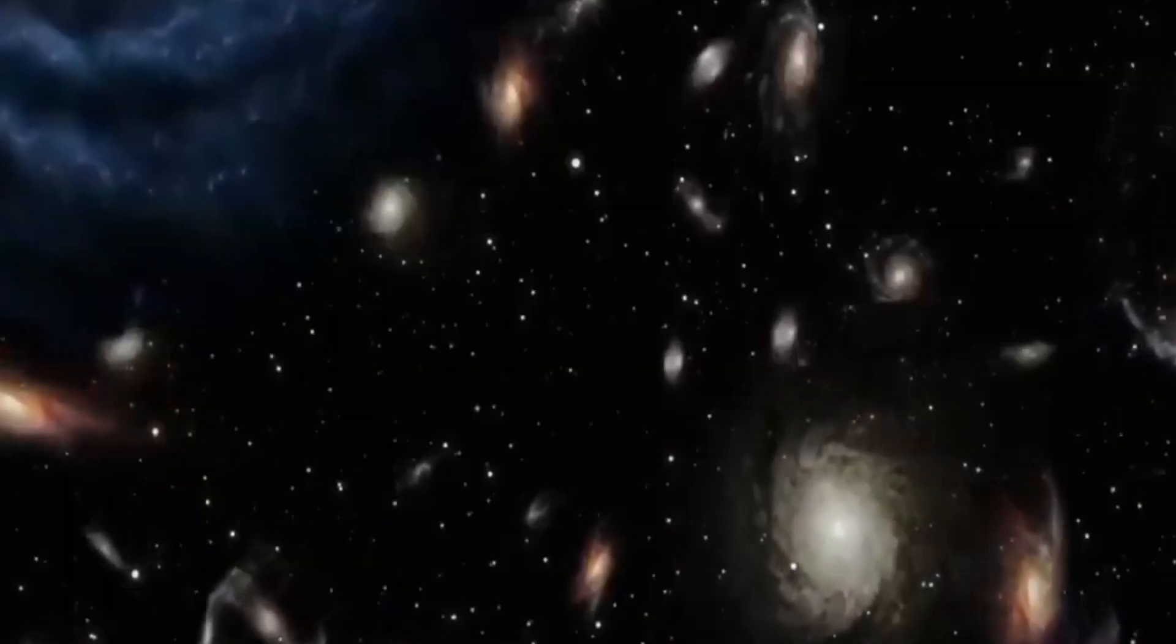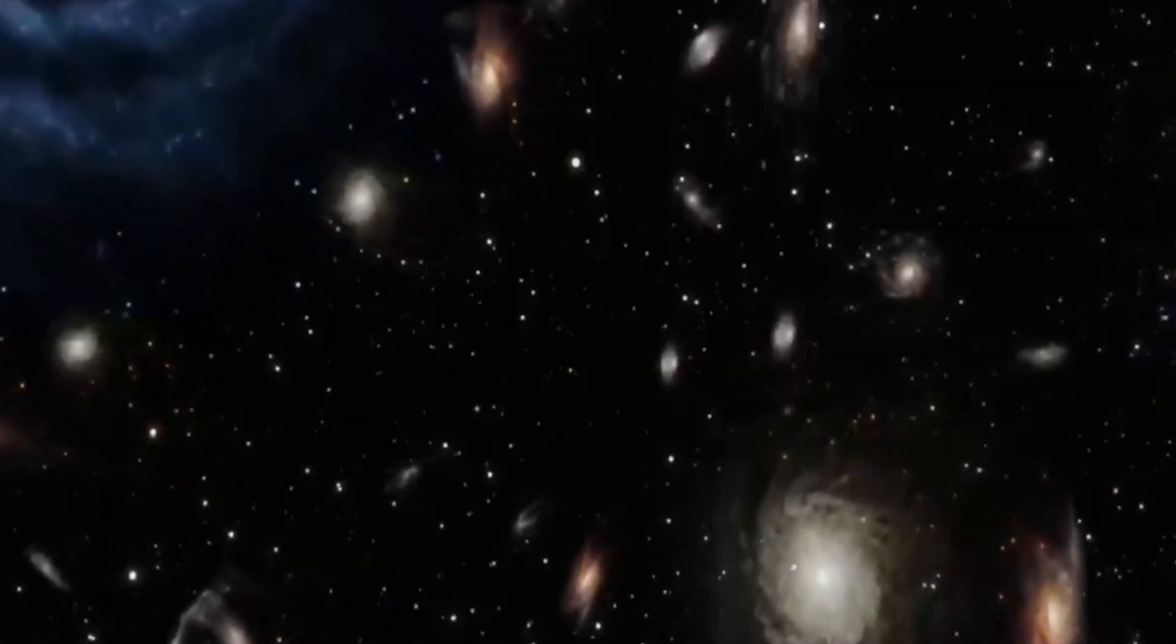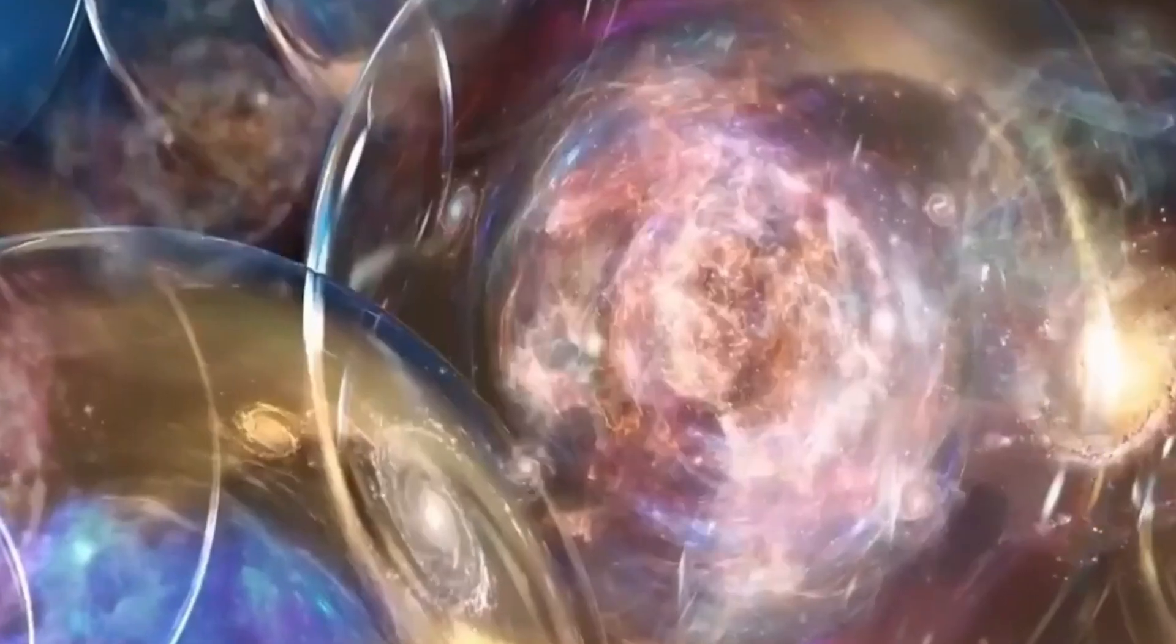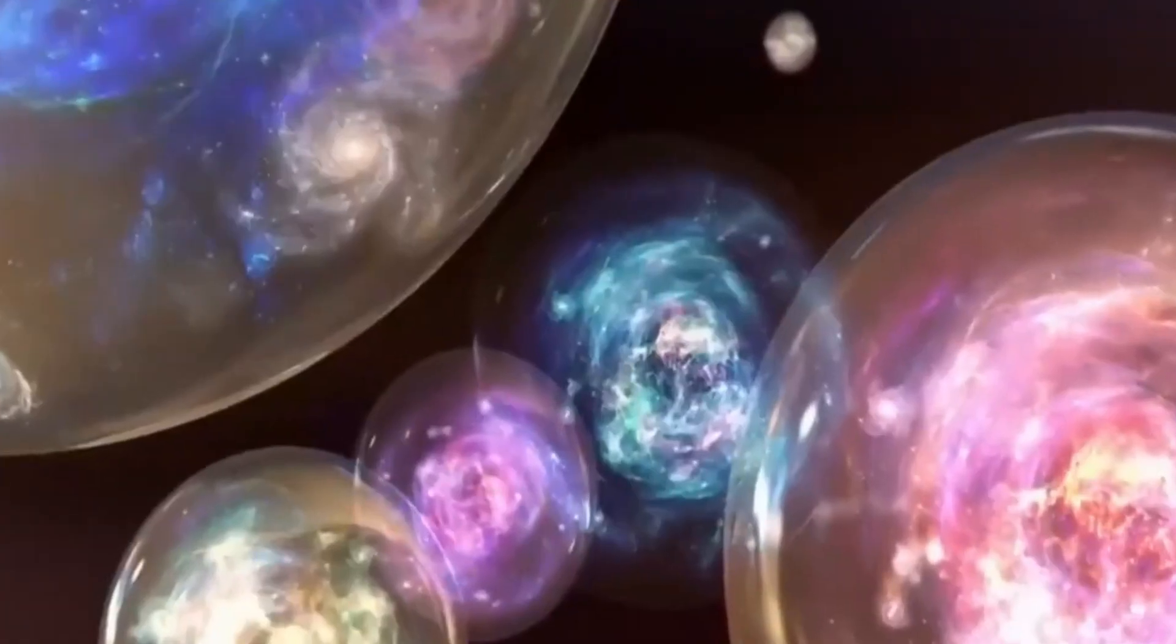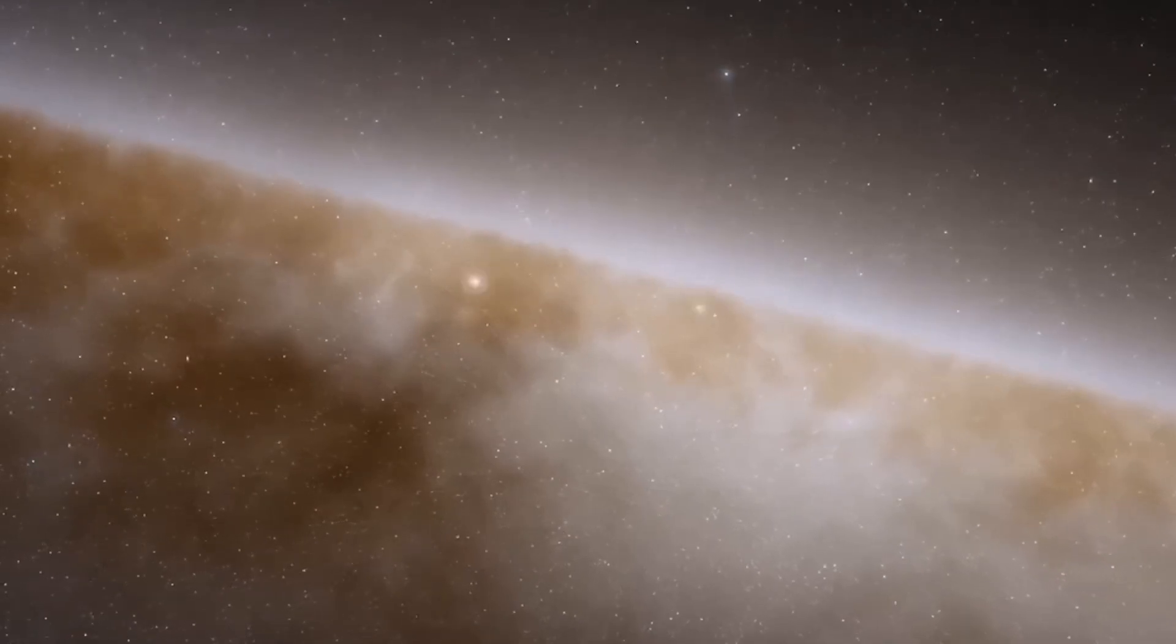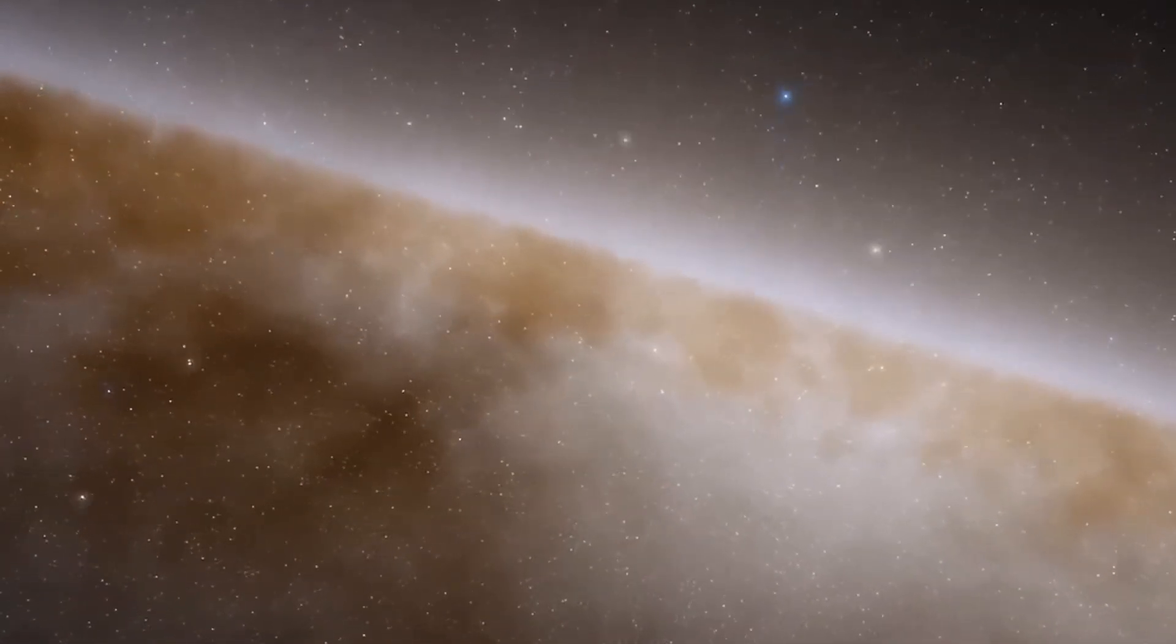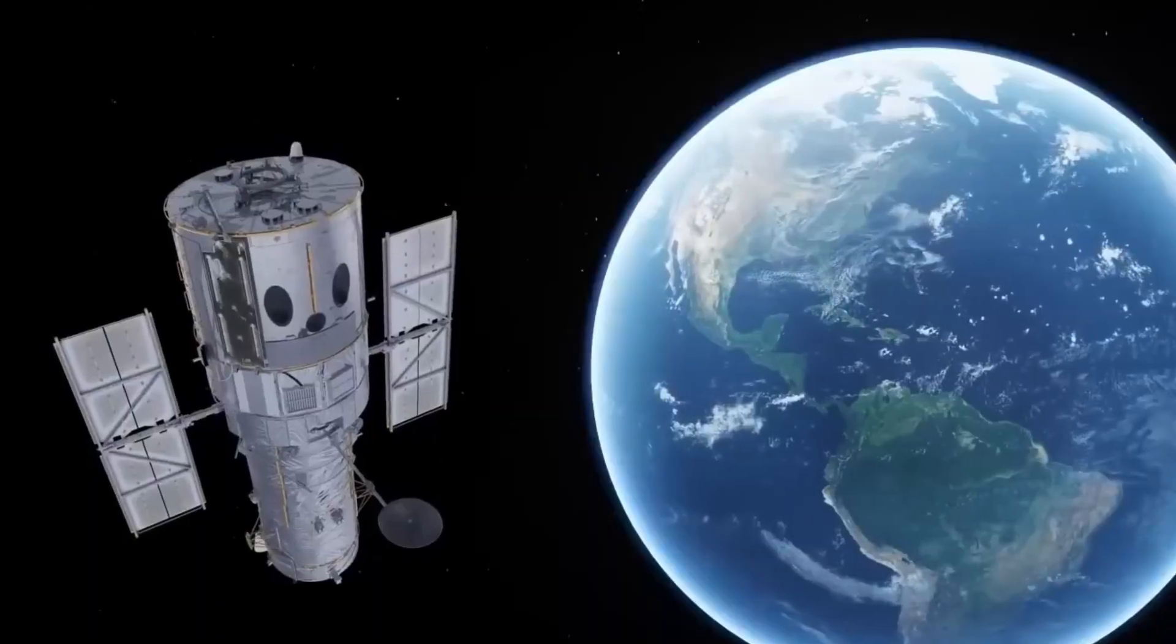We can look up into the sky and see the oldest light in the universe. It was released 380,000 years after the Big Bang, when the universe cooled down sufficiently for atoms to form, and at that point, the universe became transparent. That light has been traveling through the universe ever since. We have a satellite up at the moment called Planck, a European satellite that's been taking detailed pictures of this light.